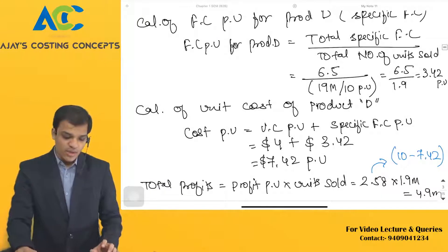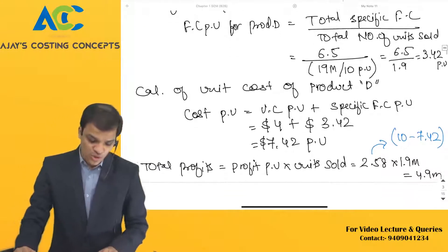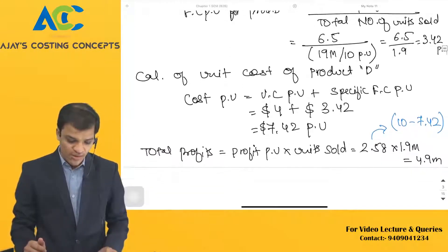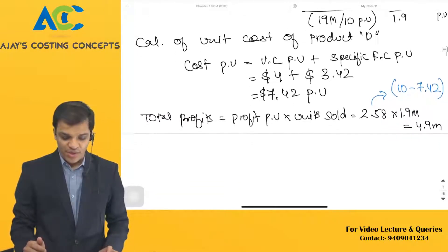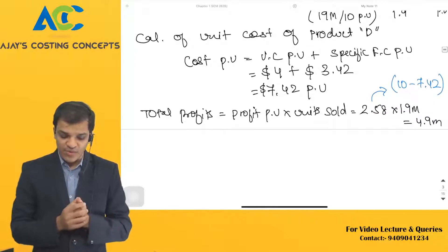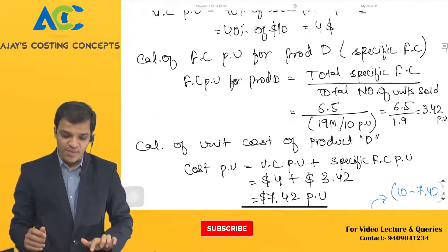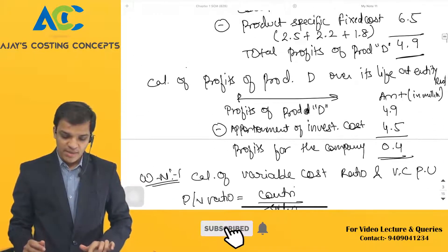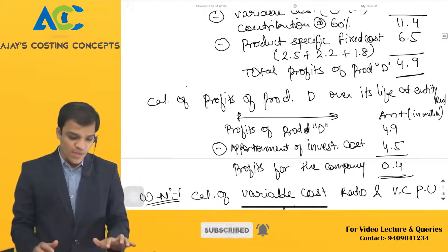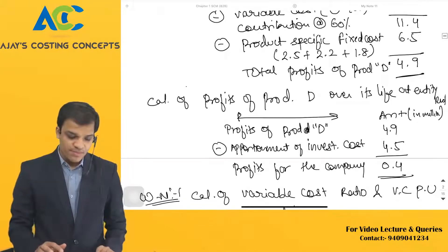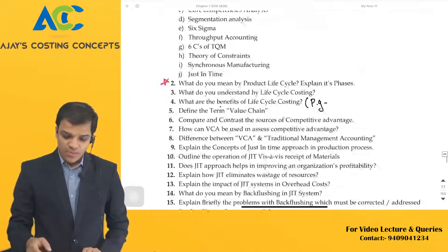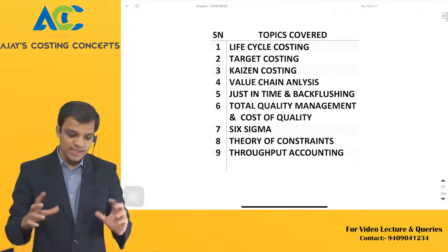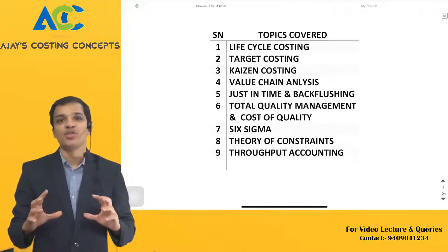The total profits in question — the profit per unit multiplied by units sold is 2.58 into 4.9 million — that has already been calculated. Now let us start with the new concept.